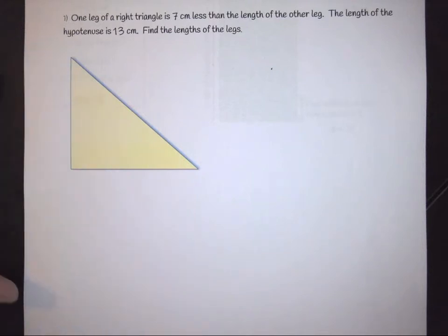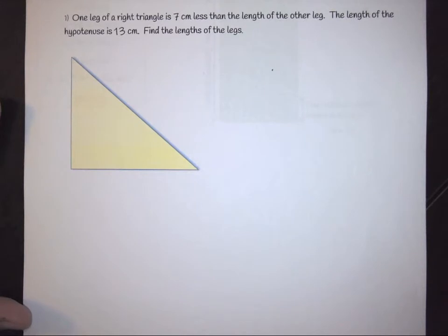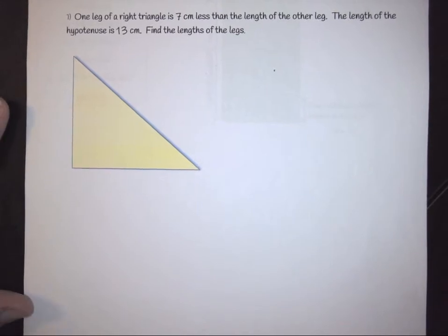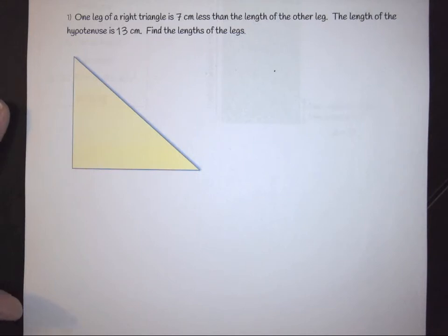One of them is a right triangle problem. So the problem itself starts by saying that one leg of a right triangle is 7 centimeters less than the length of the other leg. The length of the hypotenuse is 13 centimeters. Find the length of the legs.